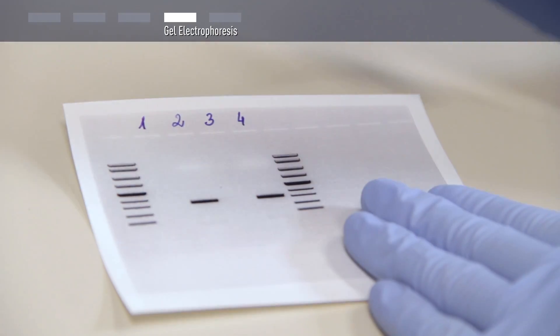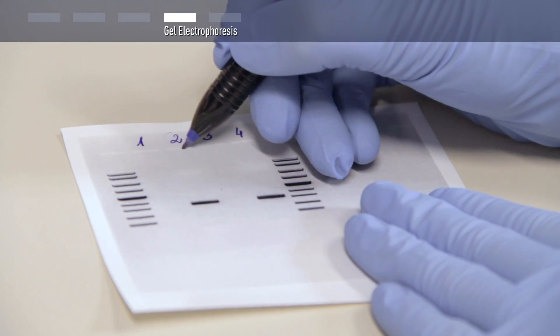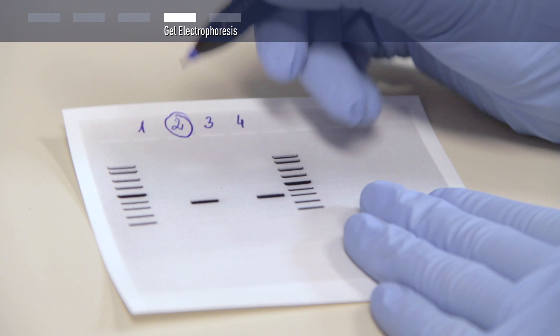After electrophoresis, analyze the DNA band pattern on the gel to identify positive colonies.